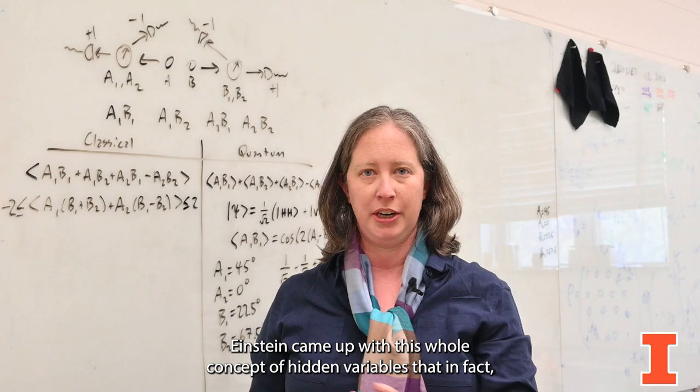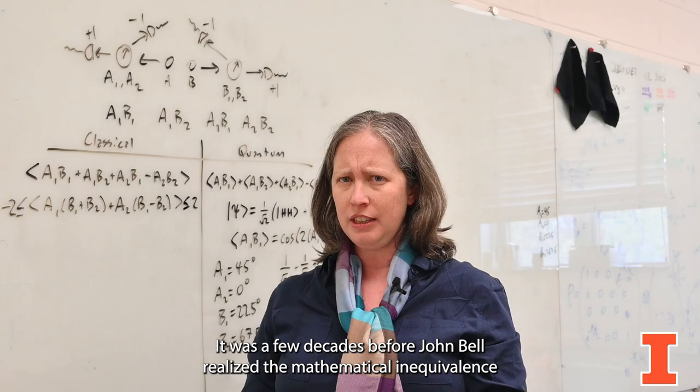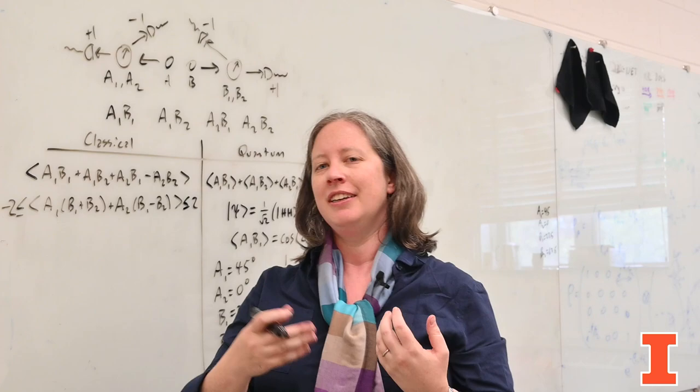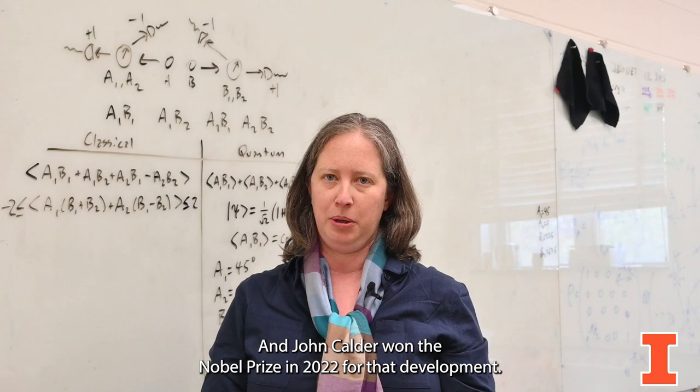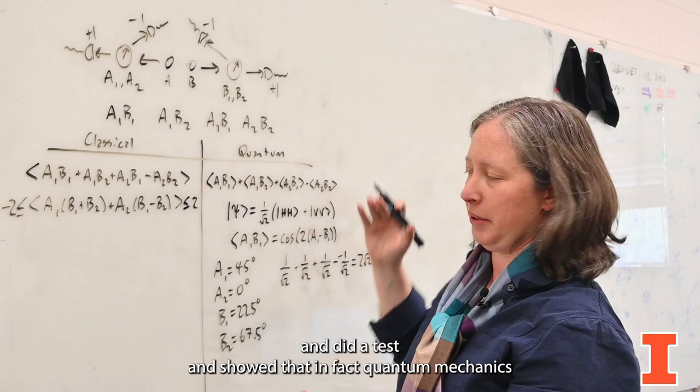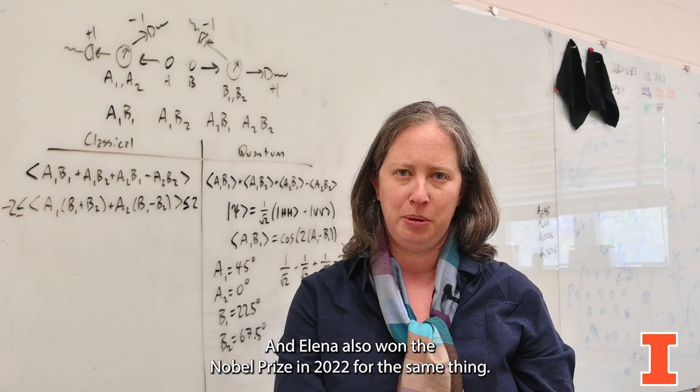So Einstein came up with this whole concept of hidden variables that in fact just because we can't measure these things doesn't mean they don't exist. He came up with that in the 1930s. It was a few decades before John Bell realized the mathematical inequivalence between these two and wrote down what are called the Bell inequalities. Another decade went by and John Clauser and colleagues came up with this formulation of how to test the difference between classical physics and quantum mechanics. John Clauser won the Nobel Prize in 2022 for that development. Shortly thereafter, Alain Aspect and colleagues actually implemented this experiment and showed that in fact quantum mechanics is the law of the universe and quantum entanglement is real. Alain Aspect also won the Nobel Prize in 2022 for the same thing.